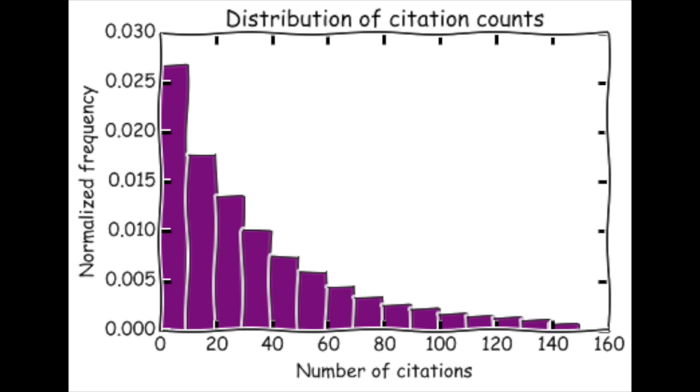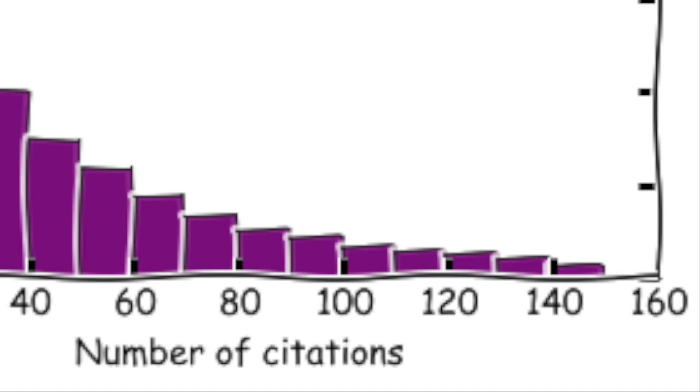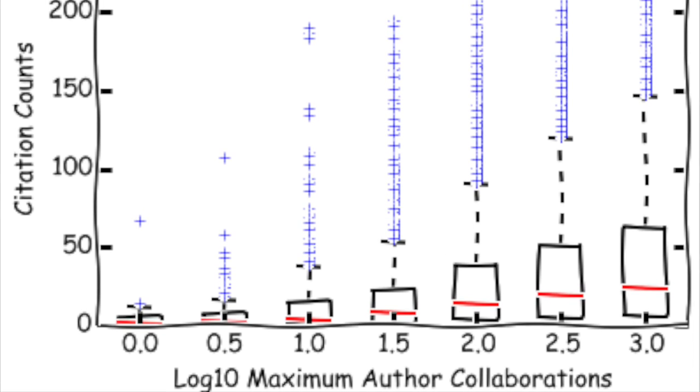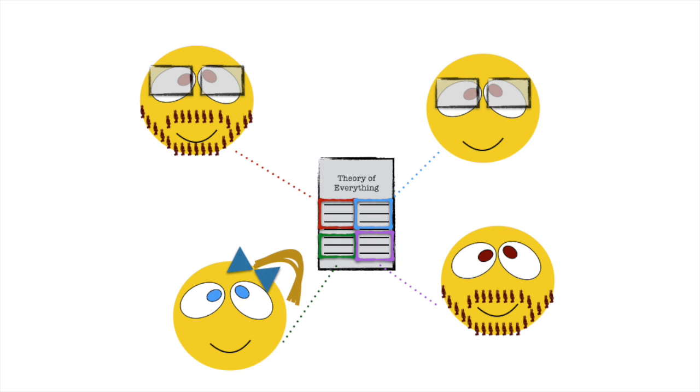The first thing you should know is that if you write a paper, chances are it's going to get zero citations. So what can we do to get into the fat tail of that distribution? We started exploring the data, and although there are many outliers, we still saw promising trends of citation counts with features like author collaborations.